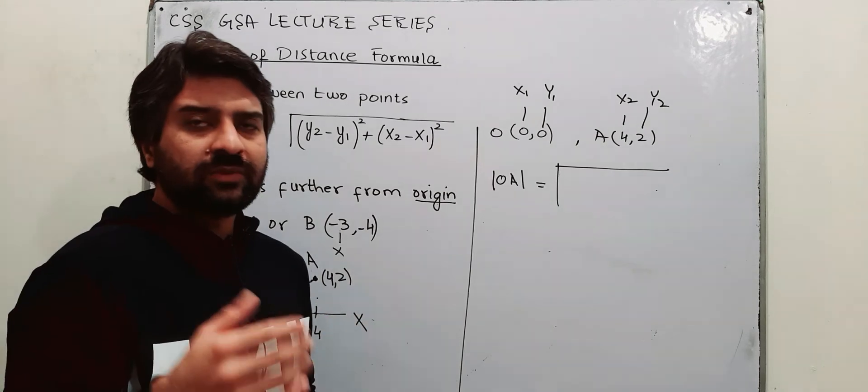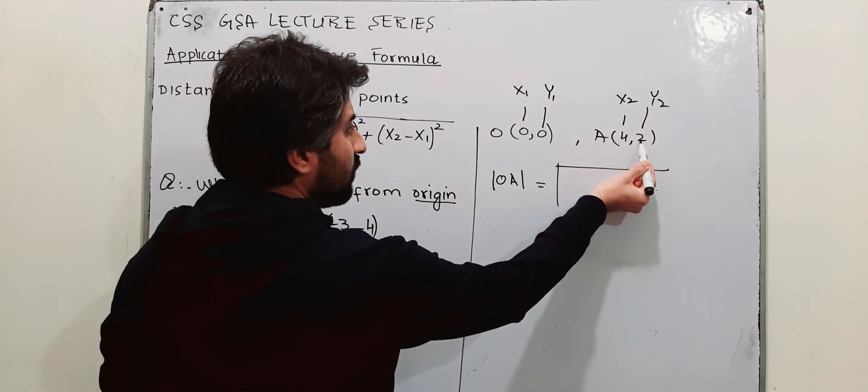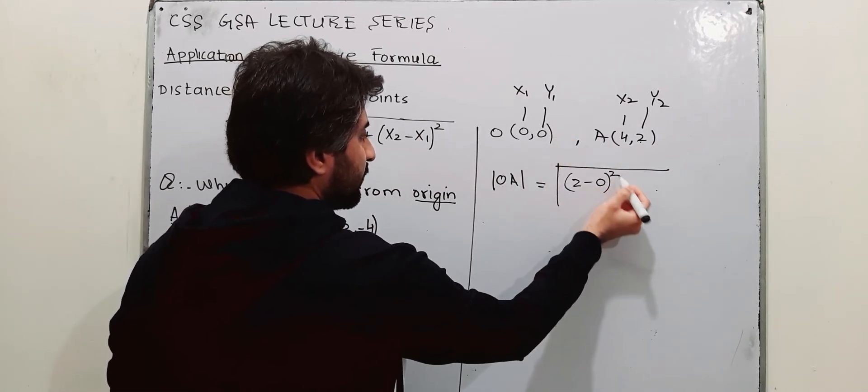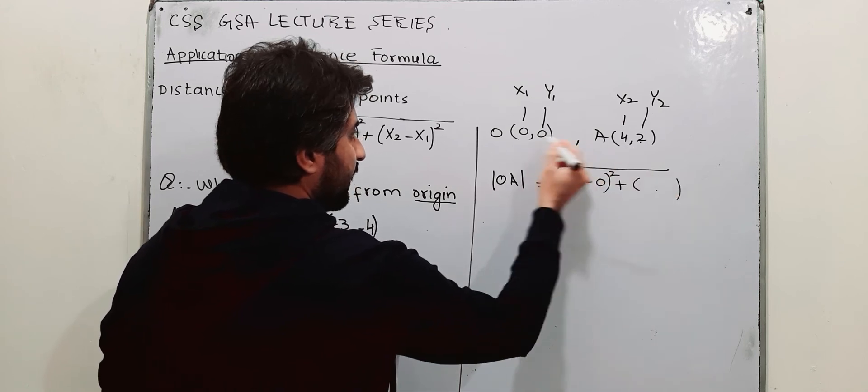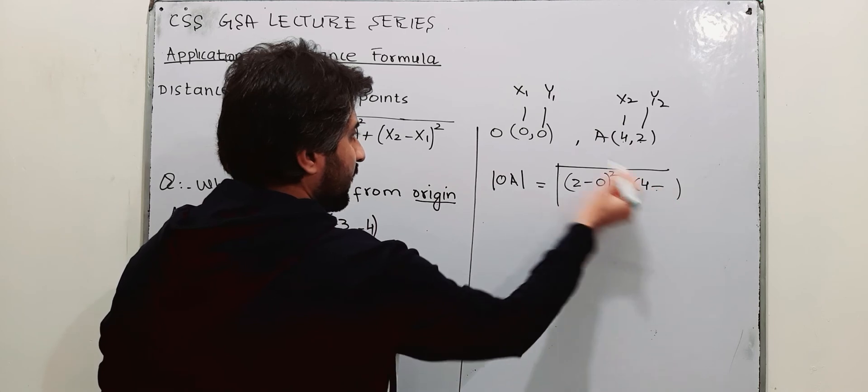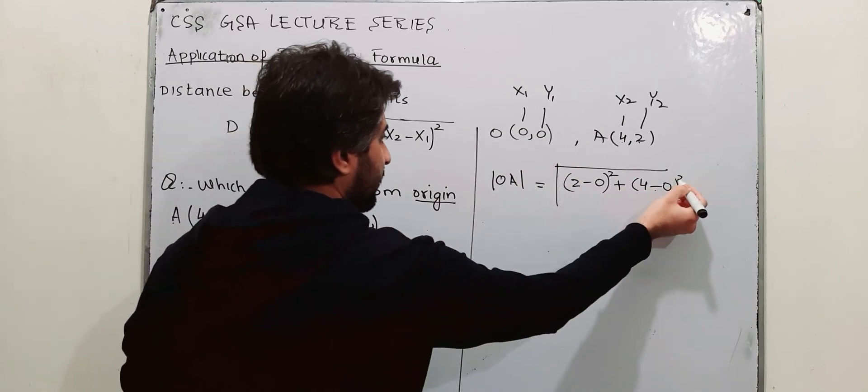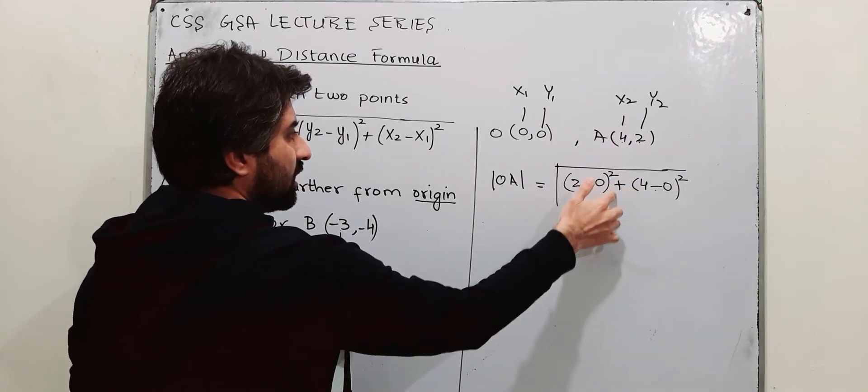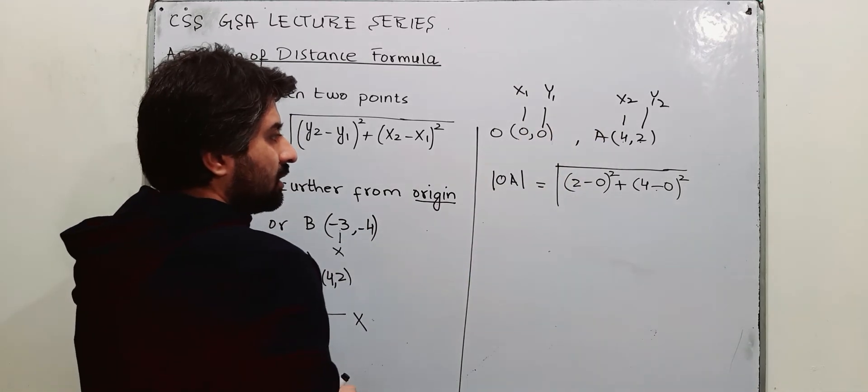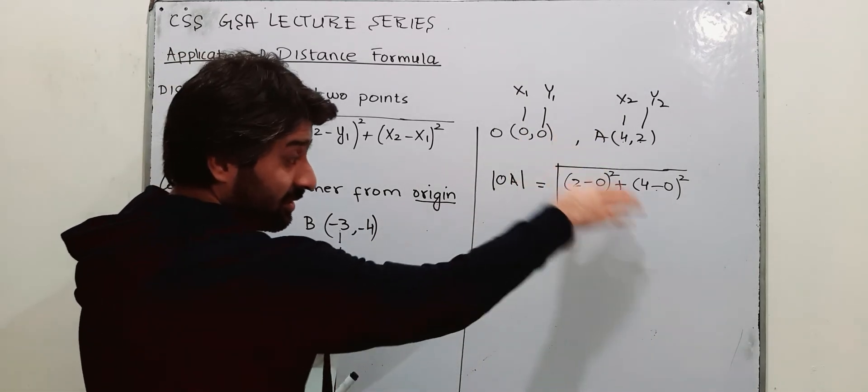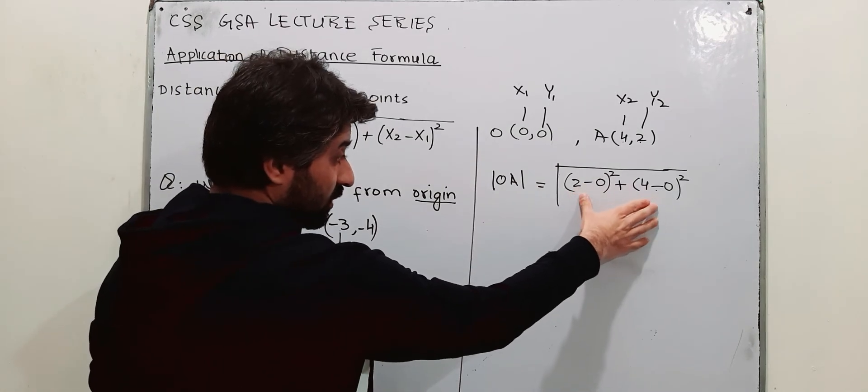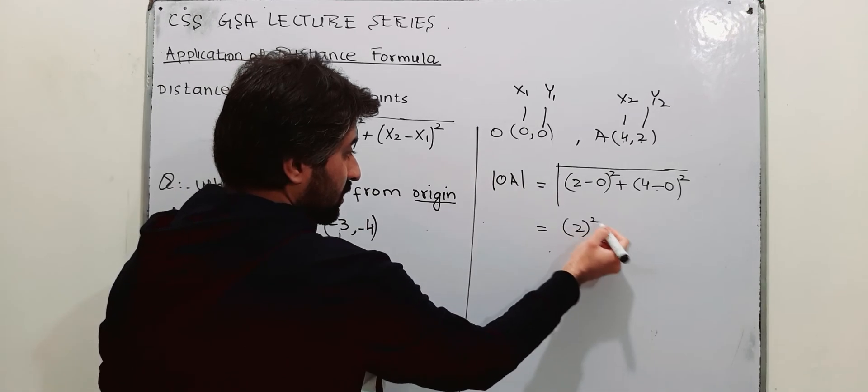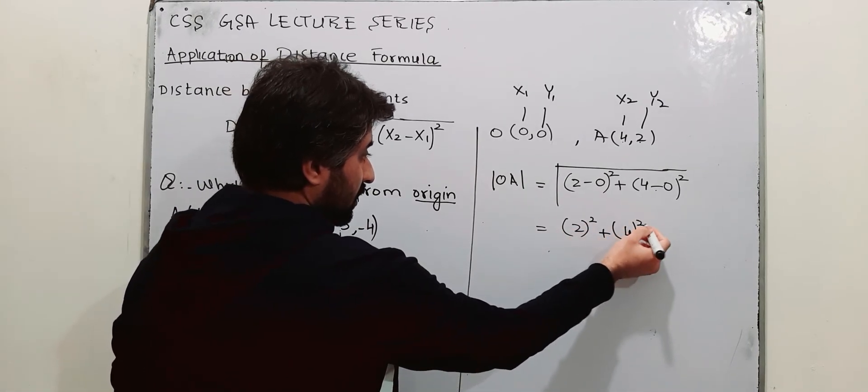Let us make it very simple. Simply subtract y and y. That is 2 minus 0, take its square. Plus, now subtract x and x. x here is 4, and x here is 0, and take square of it. Make things simple, y minus y whole square plus x minus x whole square. First of all solve within the bracket, within the square root. So 2 minus 0 is 2, 4 minus 0 is 4, and we have a square root.